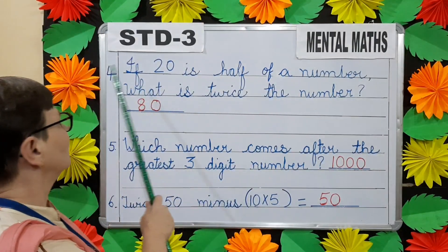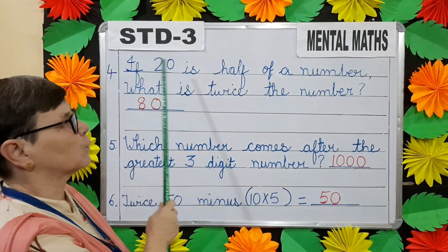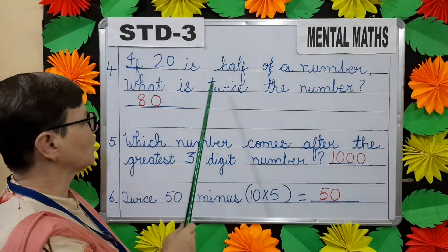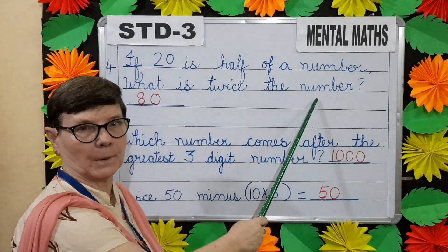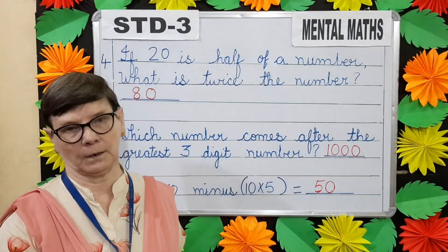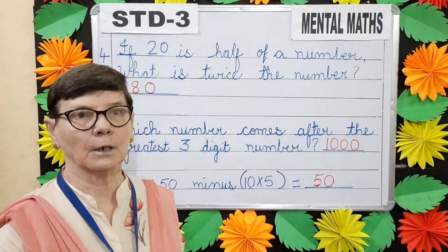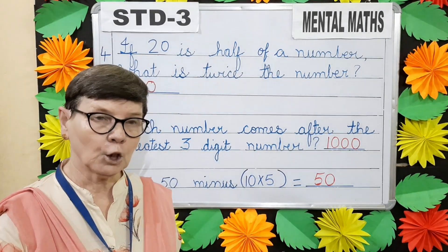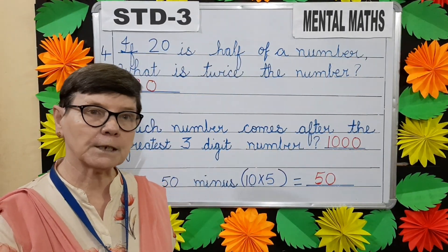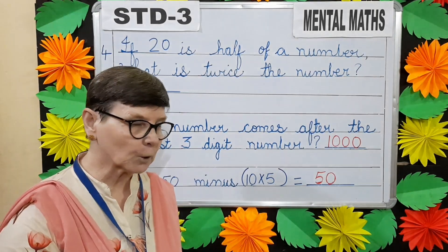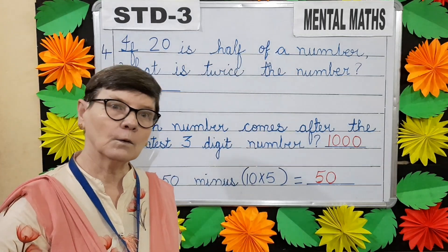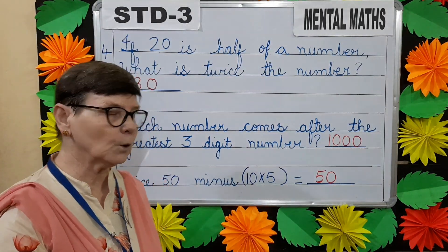Question number four. If twenty is half of a number, what is twice the number? We have half of a number and we have to find the full number. To find the full number, you will multiply twenty by two. So twenty twos are forty. Now twice forty — forty plus forty — will give you eighty.